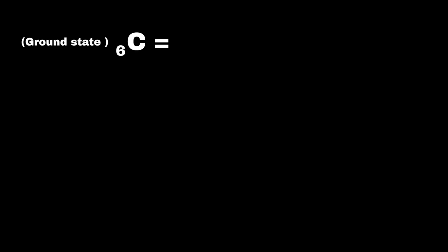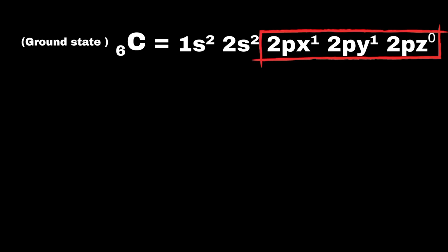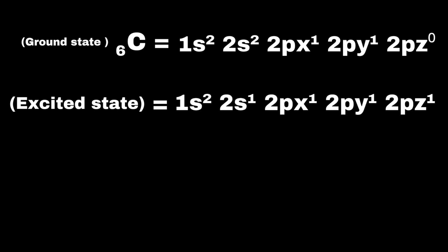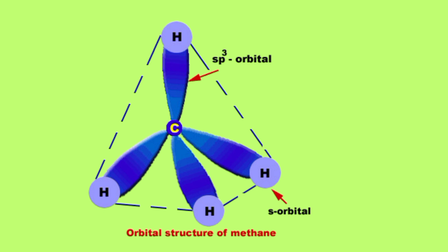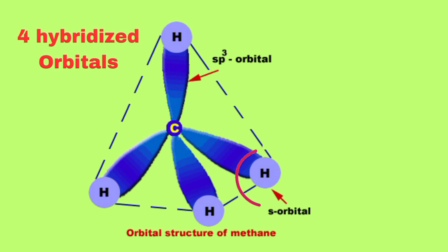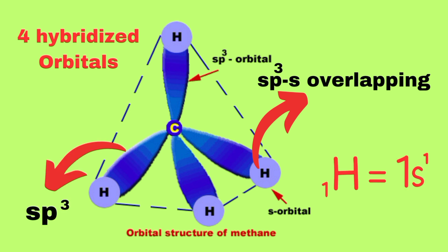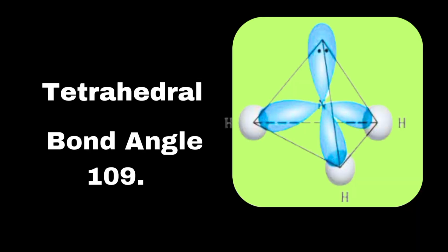Let's look at the ground state electronic configuration of carbon. It has one electron in the 2px orbital, one electron in the 2py orbital, and the 2pz orbital is empty. In the excited state, one electron from the 2s orbital will be promoted to the 2pz orbital. These four orbitals will then overlap to form four sp3 hybridized orbitals. Methane has four hybridized orbitals, each overlapping with one s orbital of hydrogen to form four carbon-hydrogen sigma bonds. The shape of the methane molecule is tetrahedral and the bond angle is 109.5 degrees.